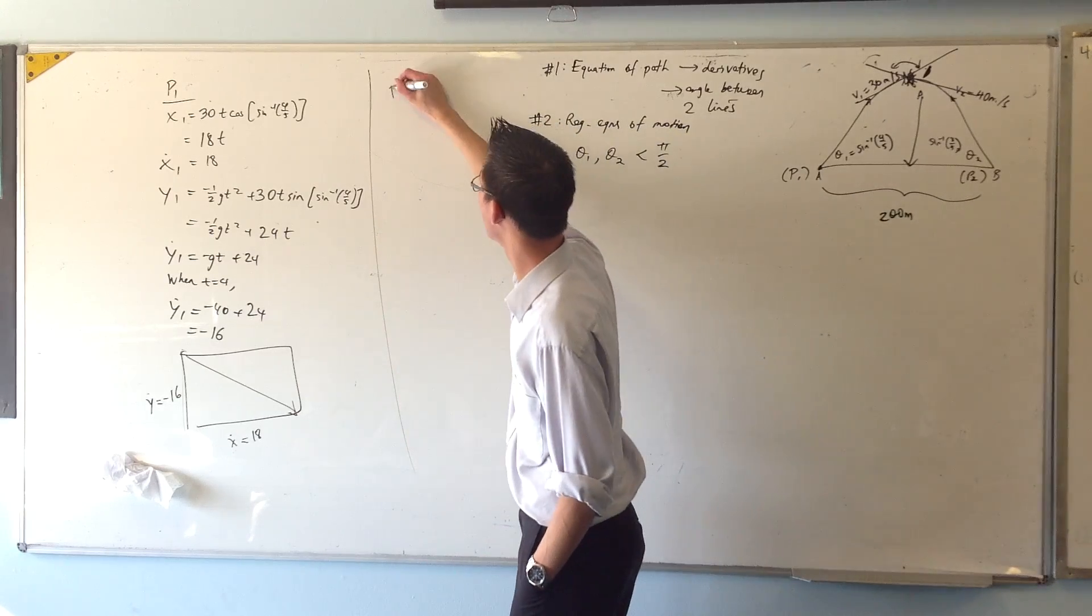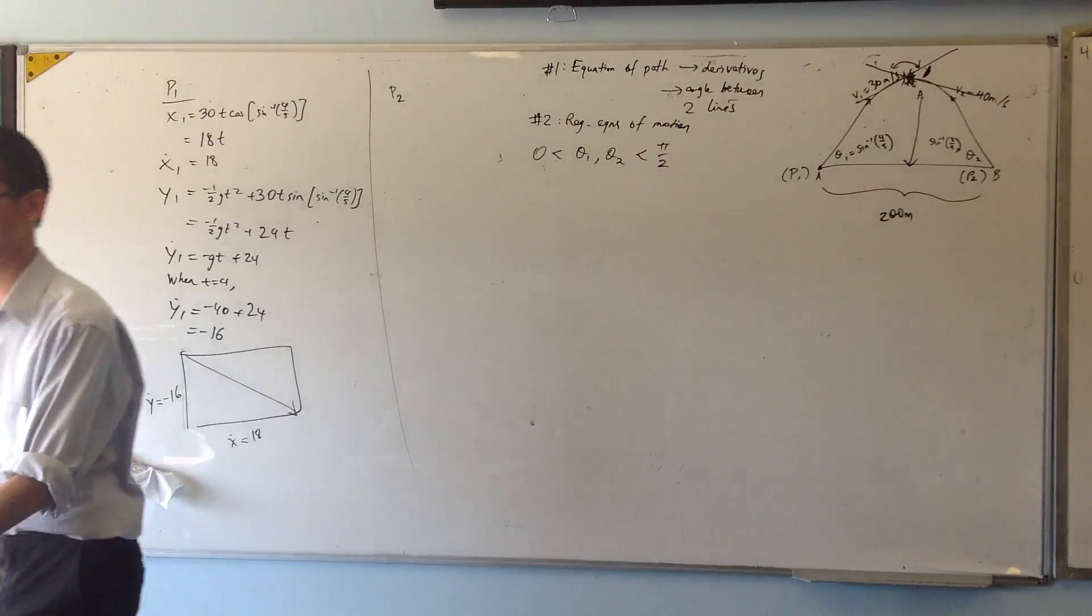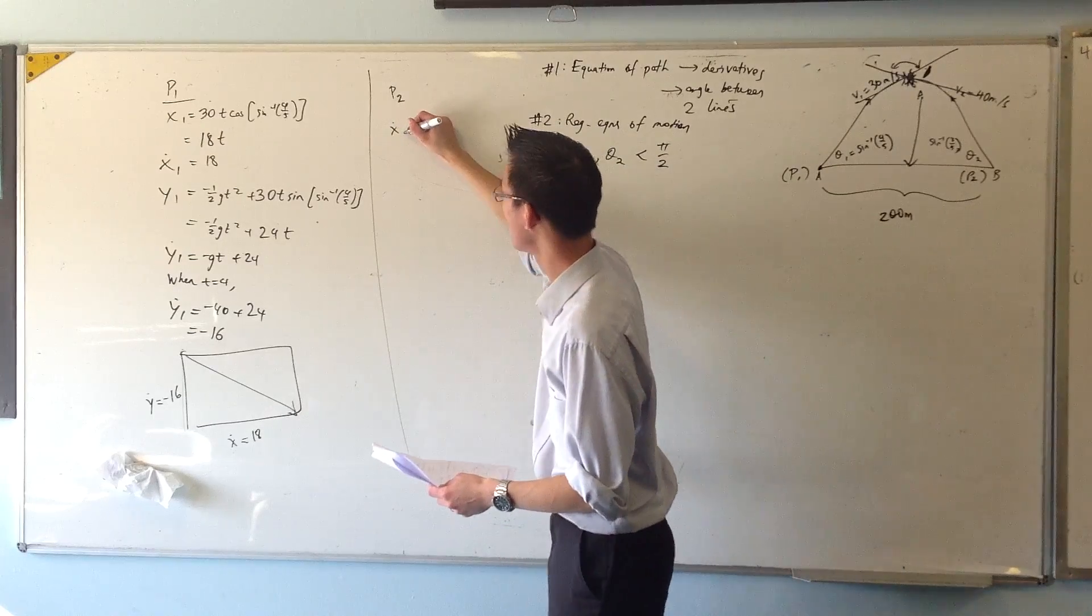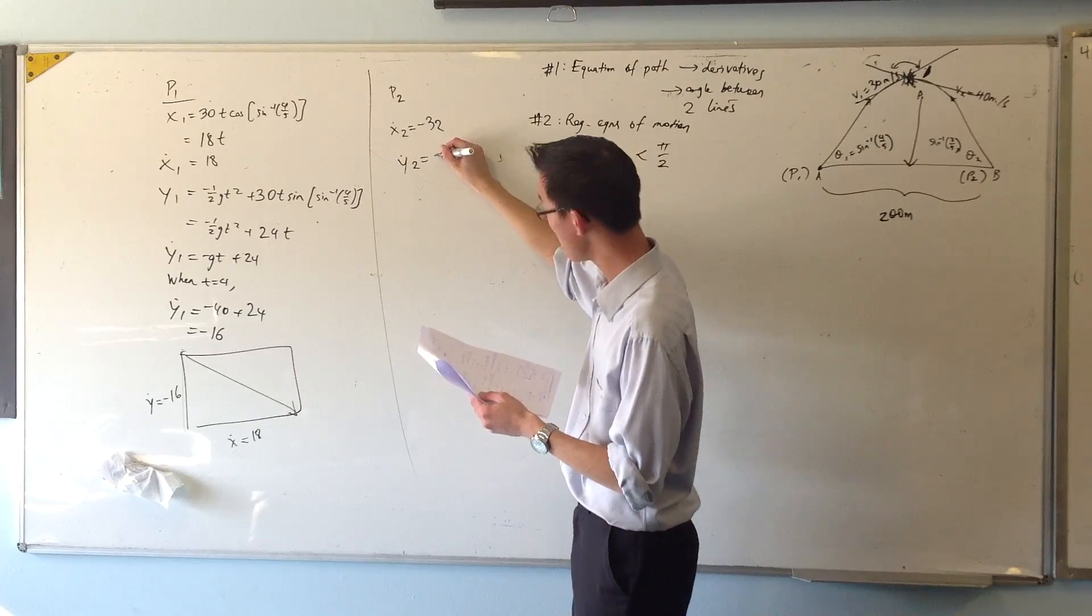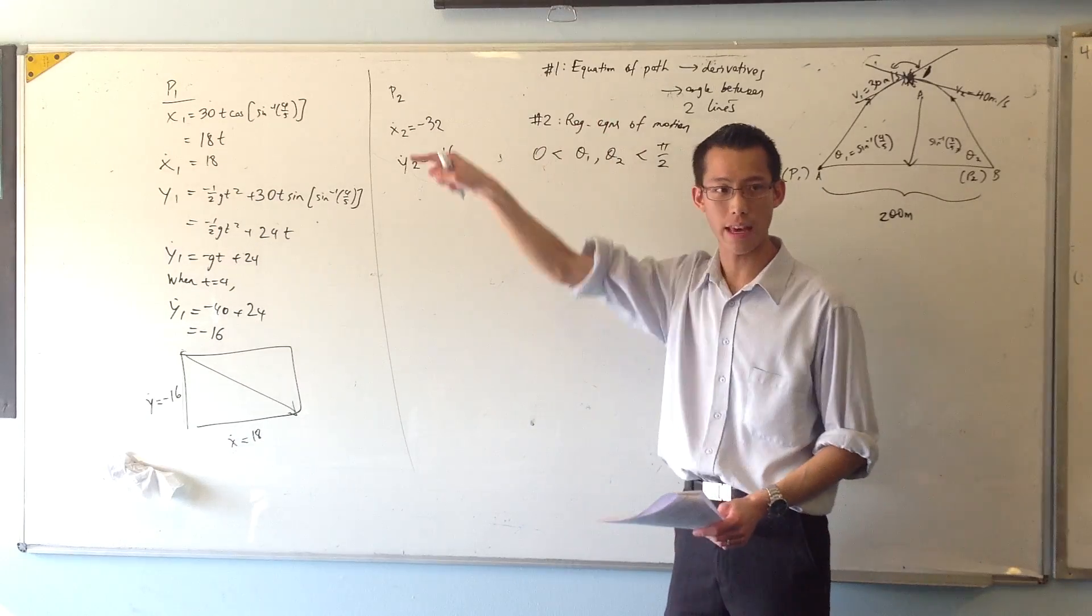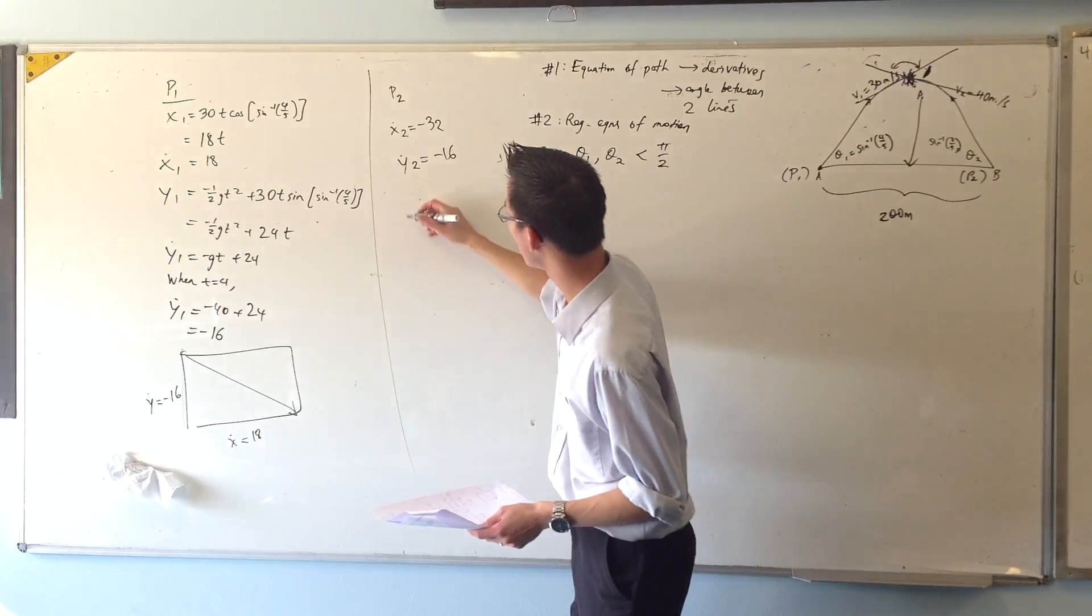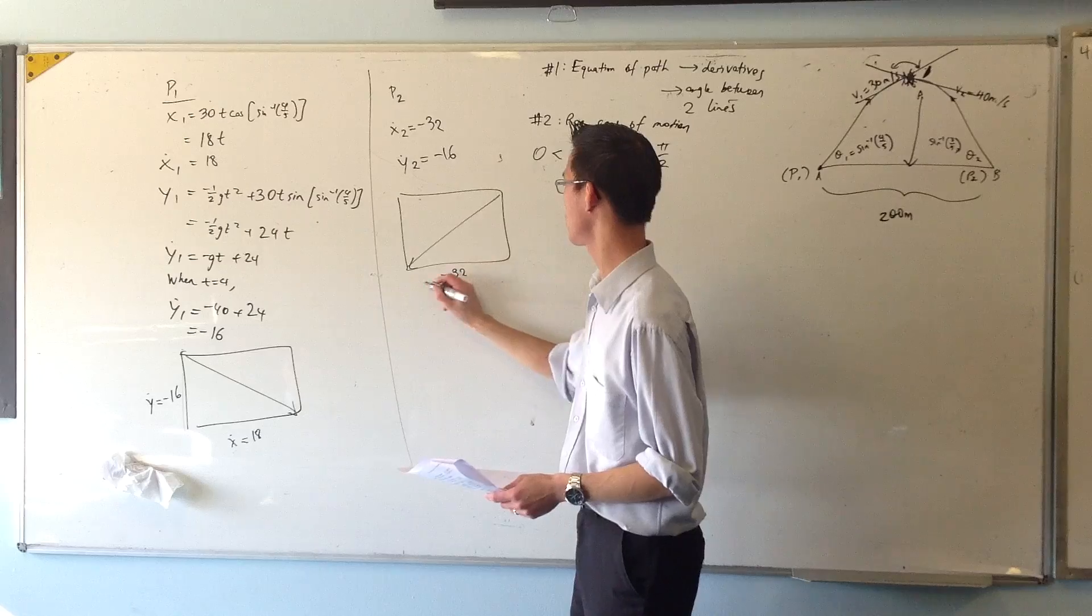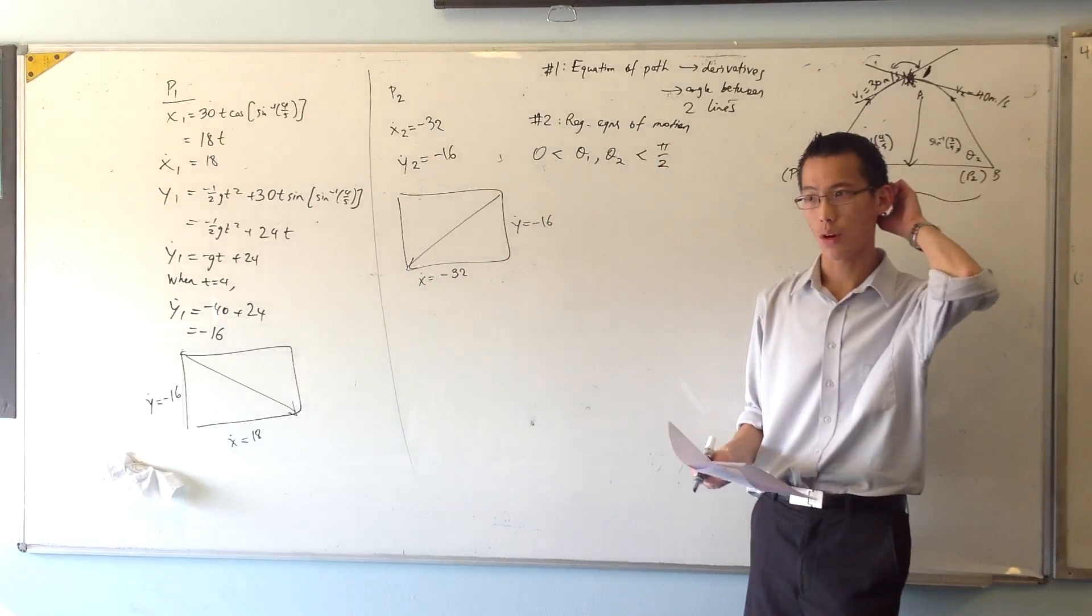Now you're going to repeat this for particle two. Let me save you a bit of time, because I've already worked this out, and the process is exactly the same as what you go through here. The horizontal velocity for the second particle is minus 32, and the vertical one is minus 16. Now does that make sense? Minus 32, it's heading to the left. Check. Minus 16, it's also dropping down. So what I've got is this kind of scenario. Minus 32, that's x dot, and y dot minus 16.